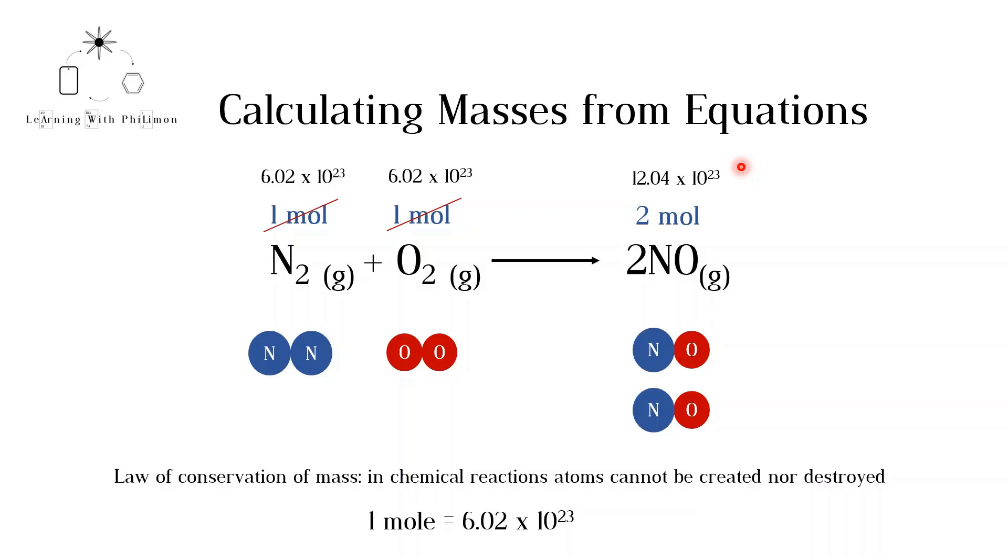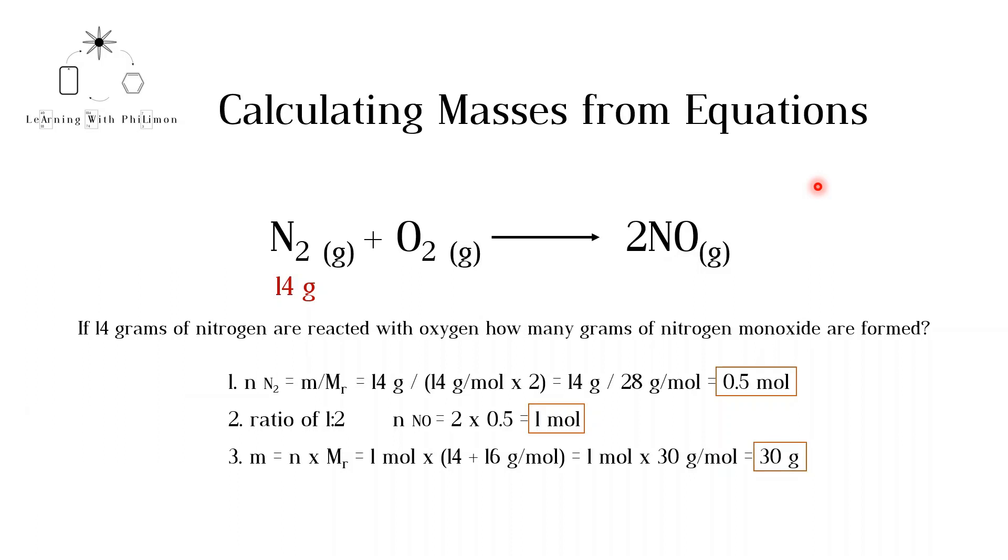You cannot make more than 2 moles, because then atoms have been created out of thin air. You cannot make less than 2 moles, because then atoms have been destroyed. In both cases, the law of conservation of mass would be violated. Now let's see how mass is related to all of this.